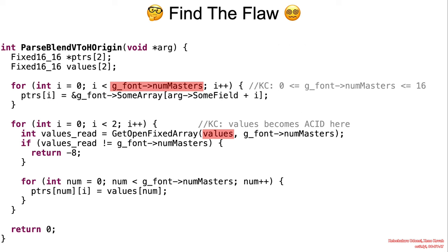The particular object being parsed was 'V to H origin,' and it is presumed that the name of the vulnerable function was 'parseblend V to H origin.' Pay attention to the declared variables and the nature and objective of the for loops.